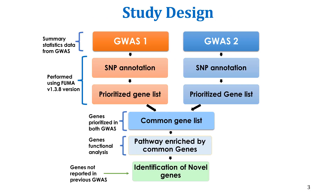We designed this study so that the summary statistics data from each GWAS was analyzed separately, in order to get a prioritized gene list from each GWAS. Normally in meta-analysis and other comparative tools, all study results are compiled, which eliminates the uniqueness of each study. So to maintain the unique value of each study, we analyzed each GWAS separately per population, and after getting the prioritized gene list using FUMA, we compared the gene lists and identified common genes present in both populations and which pathways are enriched by these genes.